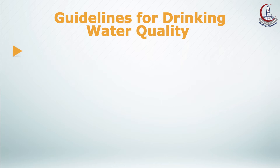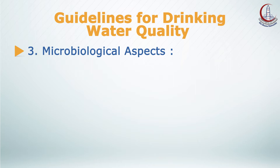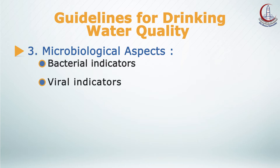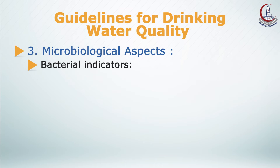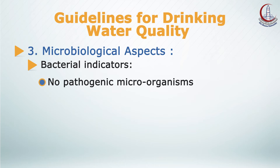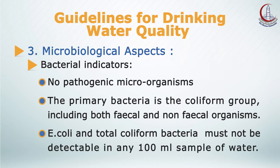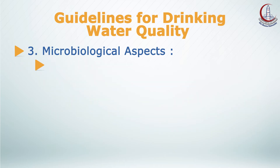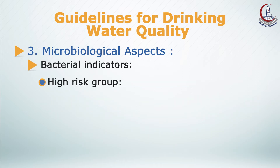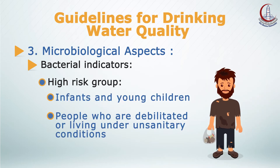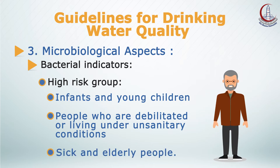The third aspect related to drinking water quality is the microbiological aspect, which includes bacterial indicators, viral indicators, and parasitic indicators. Regarding bacterial indicators, ideally drinking water should not contain any microorganisms known to be pathogenic. The primary indicator is the coliform group, including fecal organisms such as E. coli and non-fecal organisms like Klebsiella aerogenes. E. coli and total coliform bacteria must not be detectable in any 100 mL sample of water. If pathogenic bacteria are present, the first to be infected will be infants and young children, people who are debilitated or living under unsanitary conditions, and sick and elderly people.